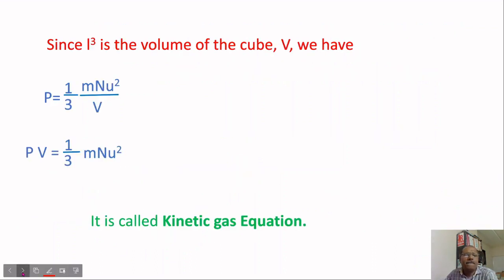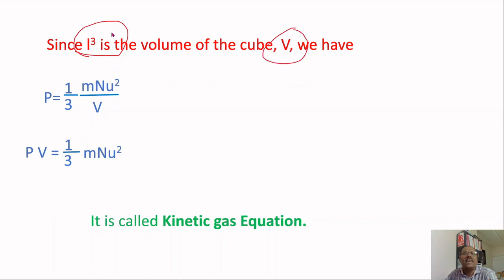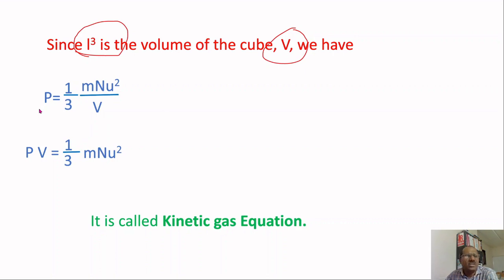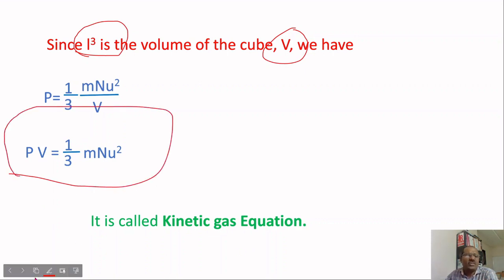Since L³ is the volume of the cube, we replace L³ with V. So P = (1/3) × MNu²/V. Rearranging, V moves to the left side: PV = (1/3)MNu². This is the kinetic gas equation, which we have now derived.